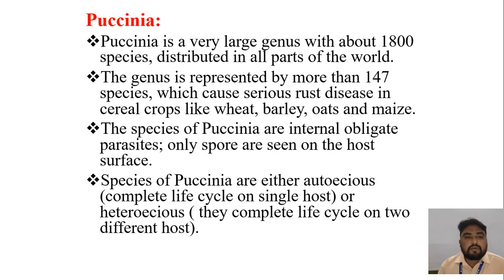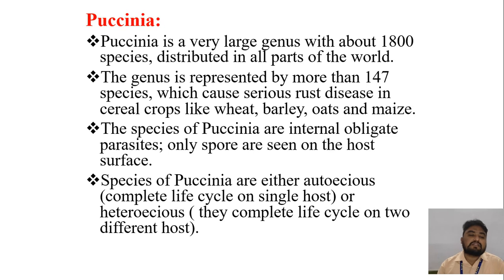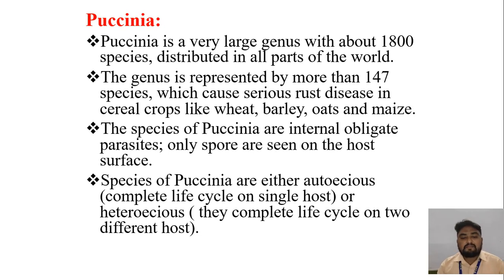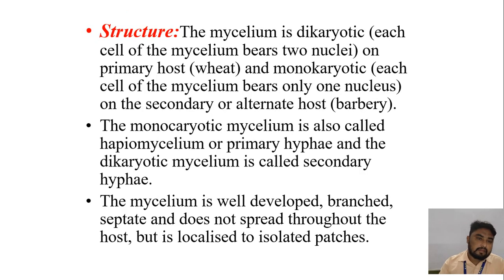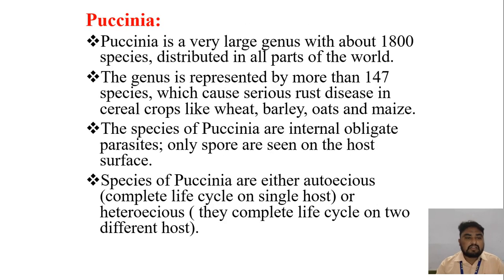The next topic is Puccinia. Puccinia is a very large genus with about 1800 species distributed in all parts of the world. The genus is represented by more than 144 species which cause serious rust diseases in cereal crops like wheat, barley, oats and maize. The species of Puccinia are internal obligate parasites; only spores are seen on the host surface.